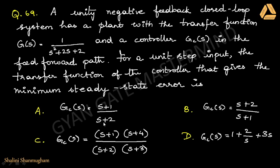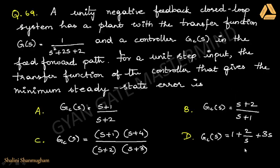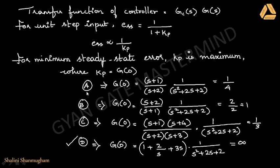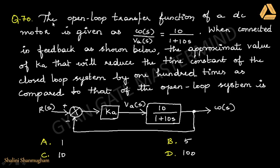Substituting s = 0 for each choice to evaluate Kp: for option A, G(0) = 1/4; for option B, G(0) = 1; for option C, G(0) = 1/3; and for option D, G(0) = infinity. The maximum Kp is option D, which means the minimum steady-state error. So D is the answer.